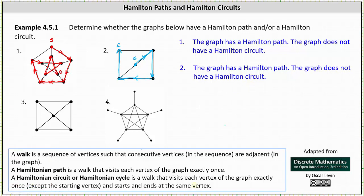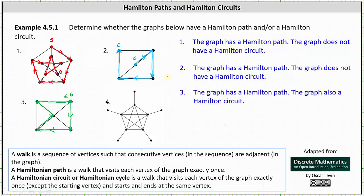For graph three, starting in the upper right-hand corner, going down, to the left, to the middle, and back up to the left — we have a walk that visits each vertex exactly once, which is a Hamilton path. Continuing the walk, we can return back to the starting vertex — we also have a Hamilton circuit. Graph three has both a Hamilton path and a Hamilton circuit.